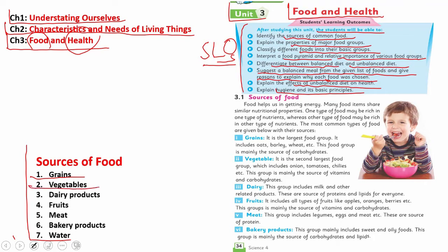The second topic is vegetables. We eat different vegetables — sometimes cooked and sometimes raw. Number three is dairy products, which we also eat. Then fruits — we all like them. Number five is meat, which we eat at dinner, lunch, and in different ways. Number six is bakery products — cake, pastry, biscuits, and so on. And water is the food of prime importance.